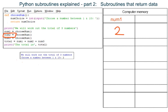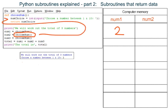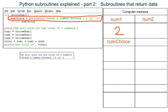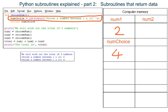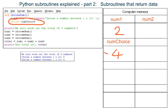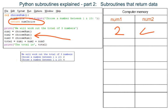The num2 variable is made. Subroutine choose_num is called and Python jumps up the program to do the code inside the subroutine. Local variable numchoice is made and an integer is stored in it. Python gets the data out of variable numchoice and destroys this variable. Python returns with the data to the place where the subroutine was called and stores the data in the already made num2 variable.